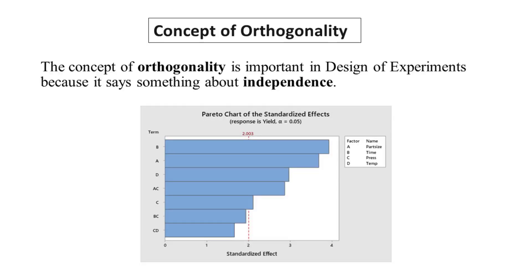The concept of orthogonality is important in design of experiments because it says something about independence. It signifies that the changes in one factor do not affect the changes in another, allowing for a clear and distinct understanding of the individual effects of each factor. This independence is essential in ensuring the validity and reliability of experimental results.